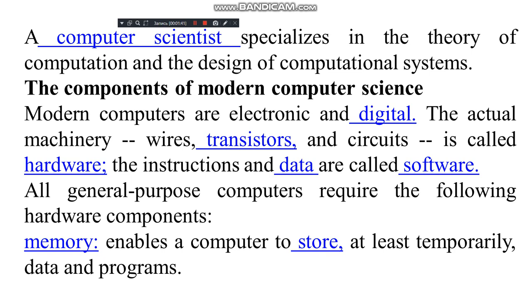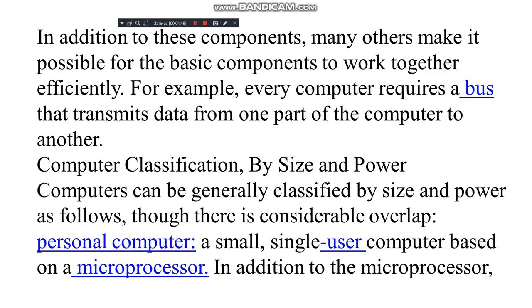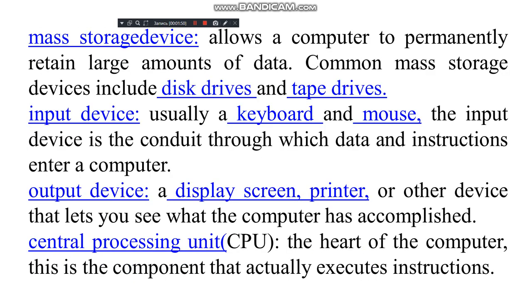All general-purpose computers require the following hardware components: memory, which enables a computer to store at least temporarily data and programs; mass storage devices, which allow the computer to permanently retain large amounts of data — common mass storage devices include disk drives and tape drives; and input devices, usually a keyboard and mouse, through which data and instructions enter a computer.